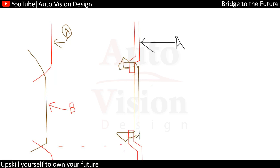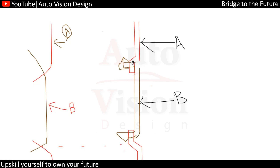Part A is assembled first and Part B is assembled next. We already know what the gap condition will be available here. This is how we have the gap in this part — something like this you can see as a gap. But we are checking the flush, so flush is nothing but the surface level difference.